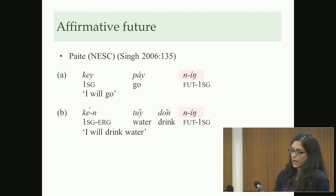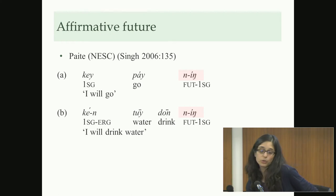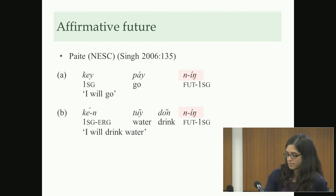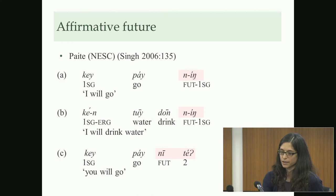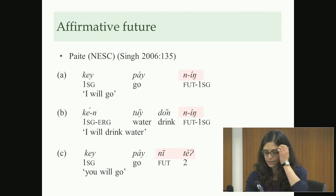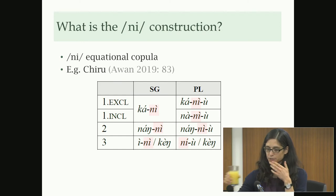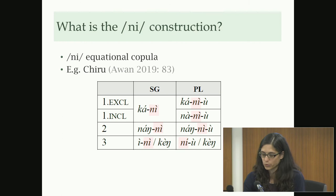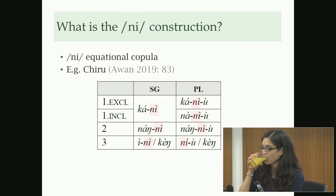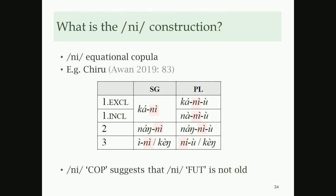The other reason is that the knee construction is unlikely to be that old as the future construction of Proto-Northwestern, because the grammaticalization source of knee — the equational copula — is still around. A general principle is that if you still find the source of a grammaticalized construction, it's presumably not that old. To illustrate, Paite in Northeastern has knee as an affirmative future construction — inflected knee as a future construction for all persons.